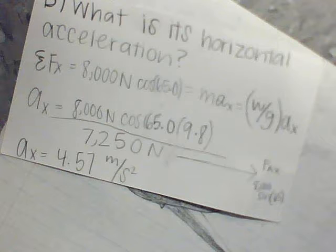We switched the equation around, and we ended up getting AX. The acceleration in the X is equal to 8,000 newtons cosine of 65.0 times 9.8 divided by 7,250 newtons, which is FAX, which is 8,000 sine 65. And the answer is, acceleration equals 4.57 meters per second squared.